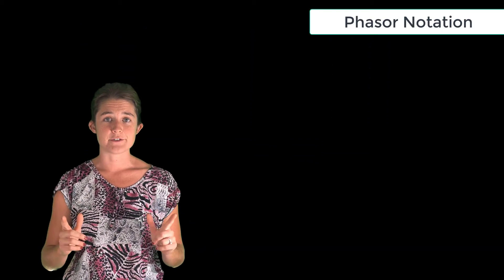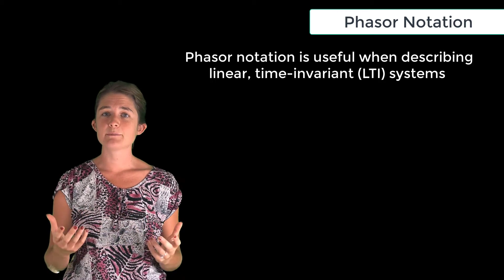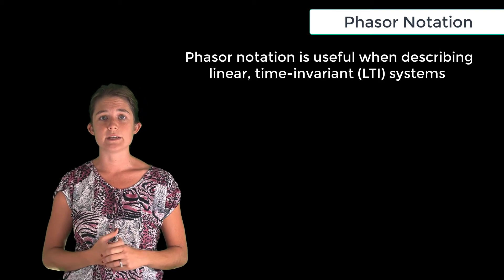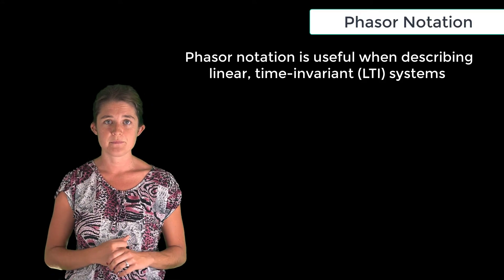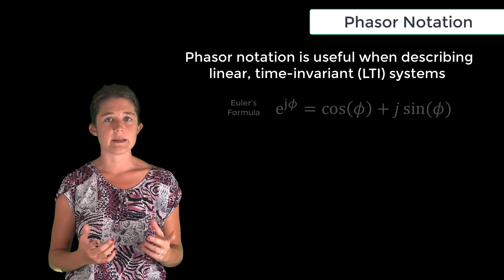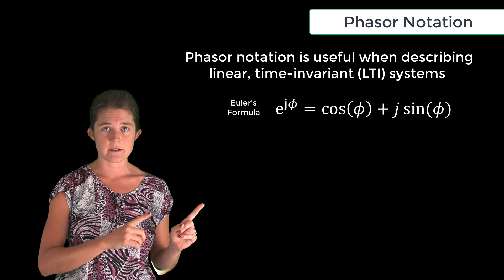Let's take a minute here to talk about phasors. Phasor notation is a simplified notation that we often use when dealing with linear time-invariant or LTI systems. The basis of phasor notation begins here with Euler's formula.